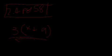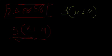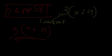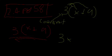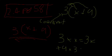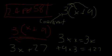Let's expand 3(x+9). What we do is multiply each number or variable inside by the coefficient of the bracket. So 3 times x equals 3x, and then 9 times 3 equals 27. So our final answer is 3x + 27. This is not really that hard.